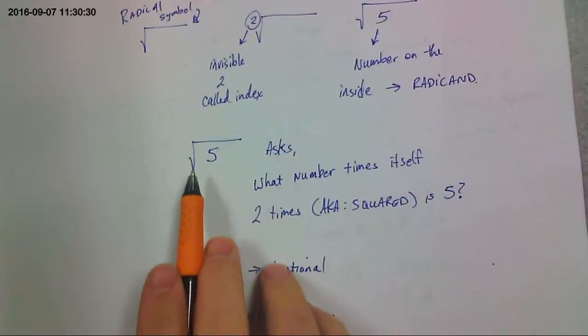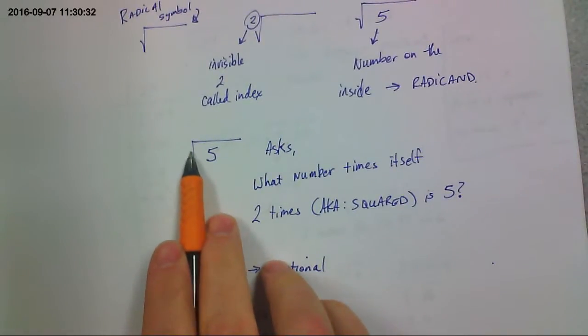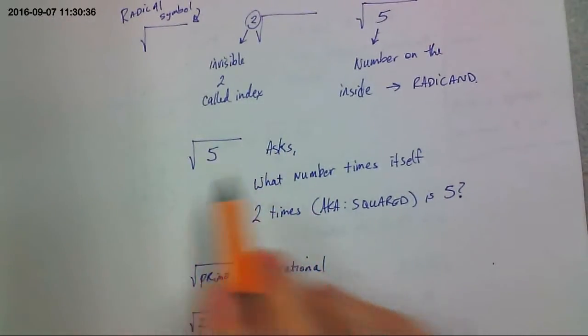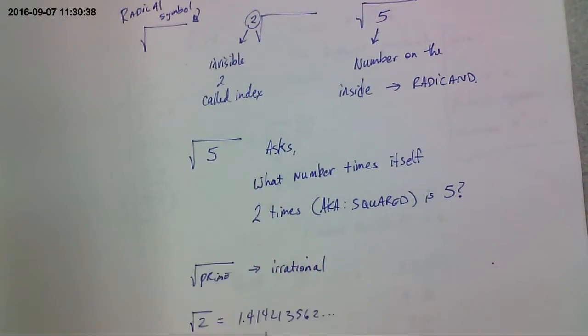The number inside the radical symbol is called the radicand. So what square roots ask, like this is the square root of five. Remember, there's an invisible two right here. This is asking, what it really means is what number times itself twice is five. What number squared is five? That's what it's asking.